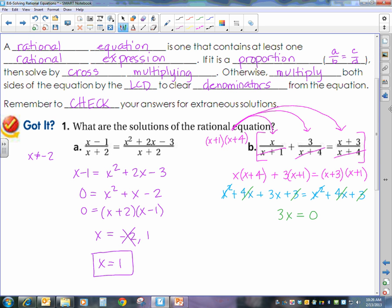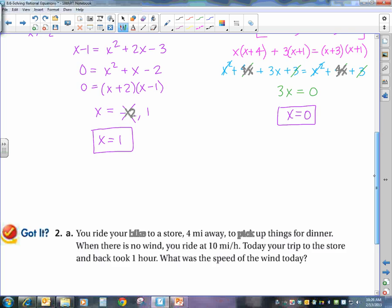So that leaves me with 3x equal to 0. For a final answer, x equals 0. What kind of restrictions do I have? x cannot be negative 1 or negative 4, which is not what I have here. Okay, so that's the process of what you want to do.